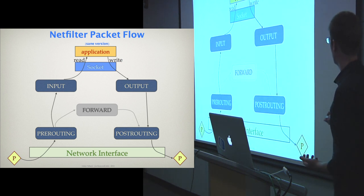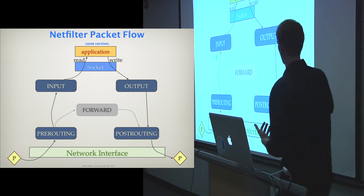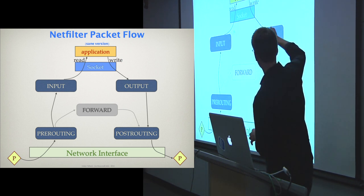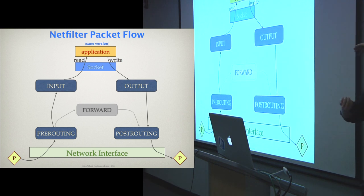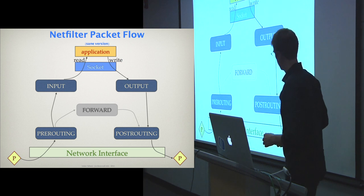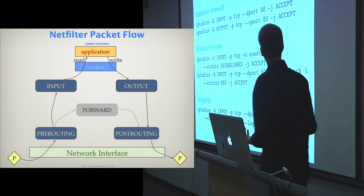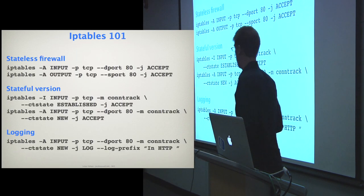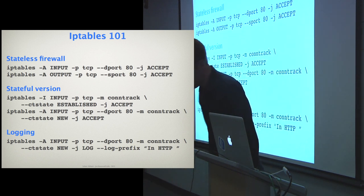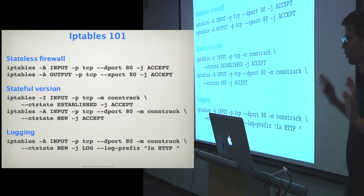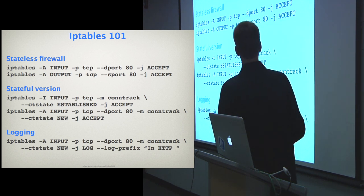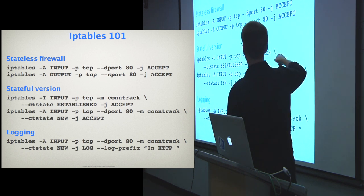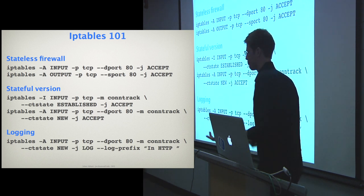We can place different types of rules on different chains. Usually most filtering rules go on input and output, and in the case of a router or perimeter firewall, we put them in forward. The most basic usage is a stateless firewall — not tracking anything, just applying rules to all packets with destination port 80 or source port 80. I accept the ingress packet, I accept the egress packet. Very basic — if you've played with Netfilter and iptables before, you've probably done this.